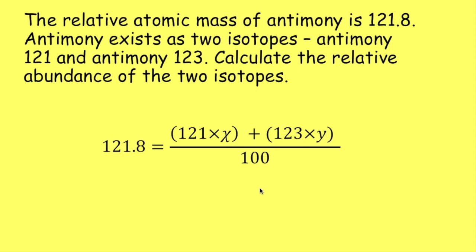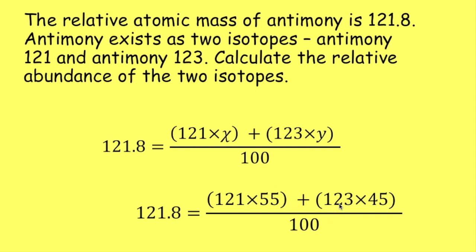So if we took an educated guess, we could try putting in 55 there and 45 there and quickly slot those numbers in. And if we did that, we would find actually we'd get a figure of 121.9. So it wouldn't be accurate, but in a multiple choice situation, that might be a quick way to decide which letter to choose. That would be the letter closest to 55 and 45 would give you your answer.